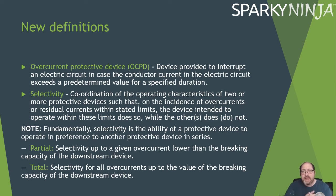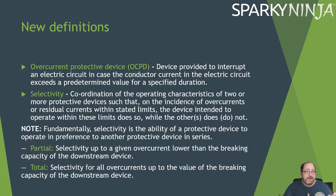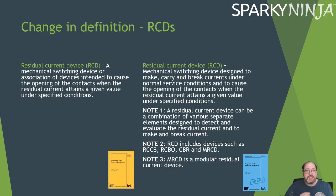Partial selectivity applies up to a given overcurrent lower than the breaking capacity of a downstream device, while total selectivity applies for all overcurrents up to the value of the breaking capacity of that downstream device.